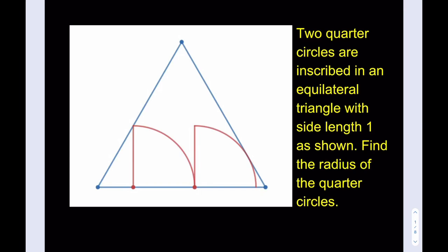Hello everyone, in this video we're going to be solving a geometry puzzle. Two quarter circles are inscribed in an equilateral triangle with side length 1 as shown. Find the radius of the quarter circles.